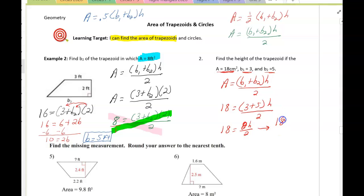That becomes 18 equals 4h because 8 divided by 2 is 4. Divide both sides by 4, and we get the height is 18 divided by 4, which is 4.5, and we're going to add the unit centimeters.